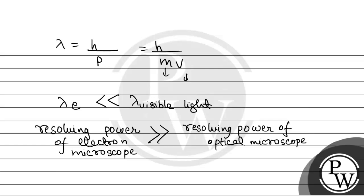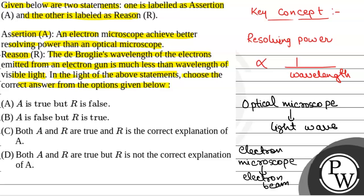So, the correct option will be both statements, assertion and reason are correct, and reason is the correct explanation of assertion. So, the correct option will be option C.